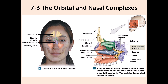The maxilla forms the background of the lateral wall and also part of the hard palate. The nasal bone makes the anterior and slightly lateral part of the nasal cavity. The lacrimal bone is also present in the lateral wall, as is the palatine bone — which contributes to both the lateral wall and part of the hard palate, which is the floor of the nasal cavity. The sphenoid bone forms the roof of the posterior part of the nasal cavity.